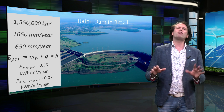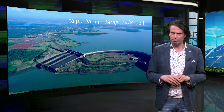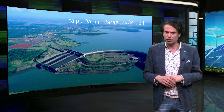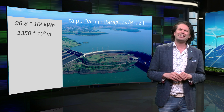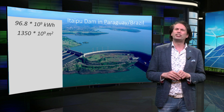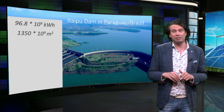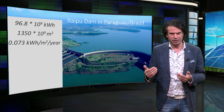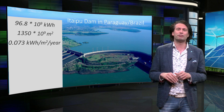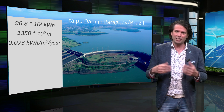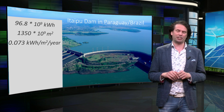If we now look at the actual data of the dam and divide the annual energy production by the catchment area, we find that they are achieving approximately 0.073 kWh per square meter per year — almost the same energy density as we found a moment ago when calculating the potential and achievable energy density.